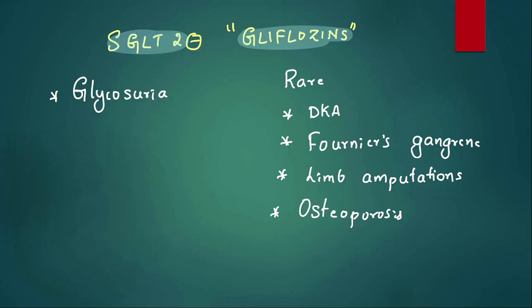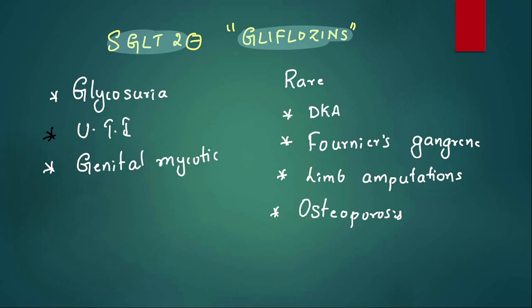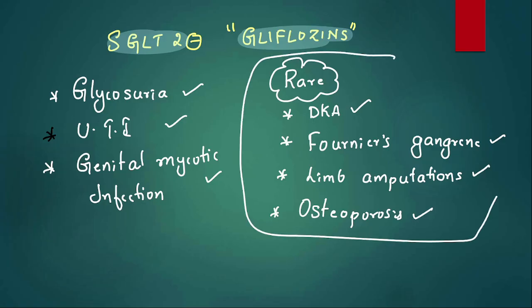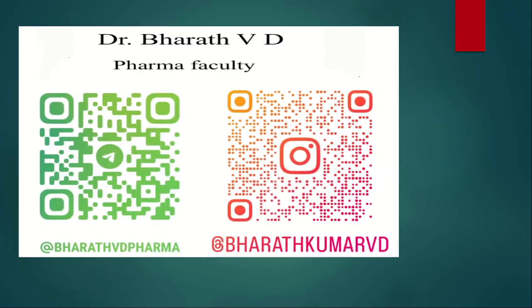SGLT2 inhibitors lose glucose via glycosuria, so patients suffer from UTIs and genital mycotic infections — that is why the patient in the question had pruritus. Rare adverse effects include diabetic ketoacidosis, Fournier's gangrene, increased risk of limb amputations, and osteoporosis. With that we are done with the fantastic five MCQs. Please like this video, share with friends, and put any doubts in the comment section. Thank you!